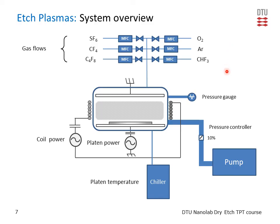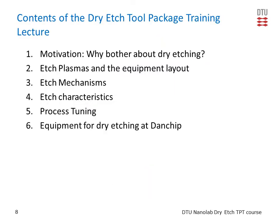So these are the overall parameters you can control on the system: the gas flows, the pressure, the temperature, and the two powers — the coil power and the platen power. This was the last part of this video, so you should continue now with the video called Edge Mechanisms.